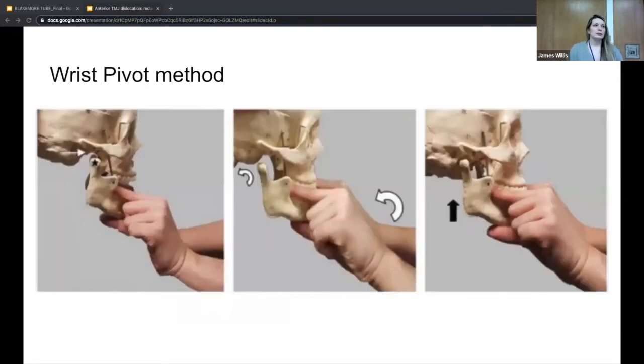The next method is the wrist pivot method. Anecdotally, a lot of people have told me this is the most successful technique. In this technique, you're going to be putting your fingers in the patient's mouth, but instead of your thumbs, it's going to be your index fingers. Place your thumbs underneath the chin, and put your index fingers either on the bottom teeth or next to them on the gums. At the same time as applying upward pressure with the thumbs, you're going to apply downward pressure with your index fingers. You're actually just going to pivot your wrist forward. So instead of applying forceful pressure, you're just pivoting the wrist. This typically reduces both sides if it's a bilateral dislocation.